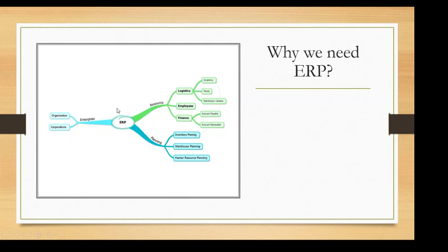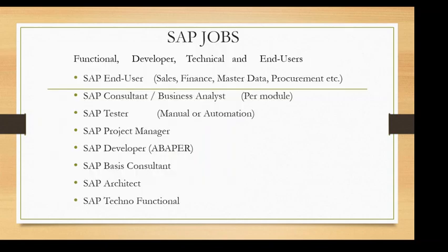Finance in any company could have different departments, different applications, and different functions. Logistics also could have different applications and functions. Human resources could have different applications as well. SAP provides an ERP software where all these different applications are integrated with each other, are coherent, and work together. That is what ERP is.